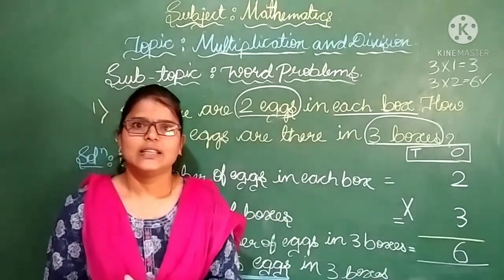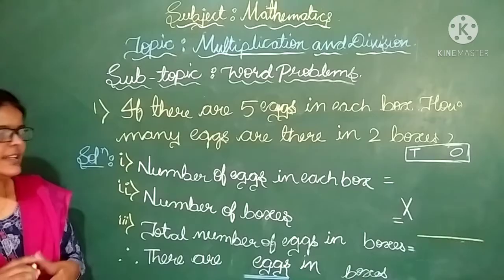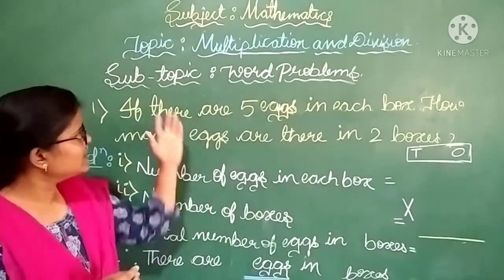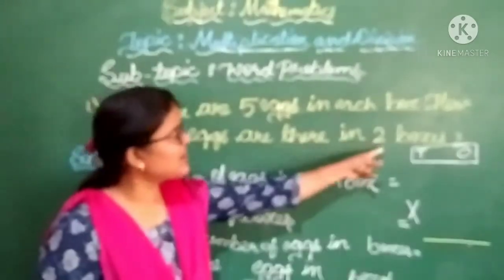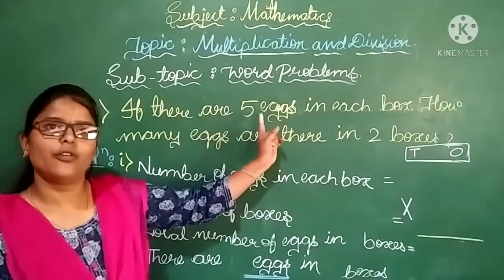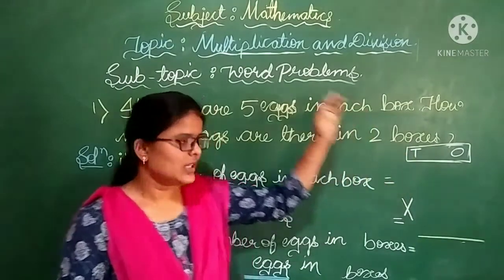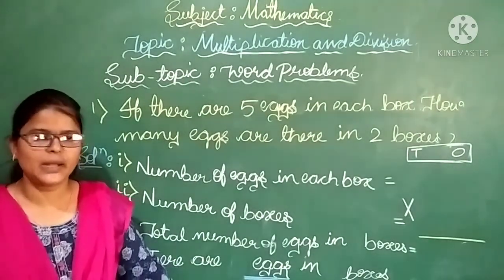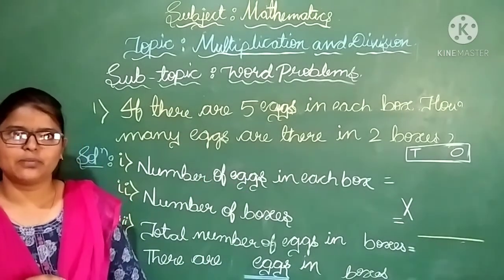Now this is the homework problem. I have changed the numbers. Number of eggs are 5 and number of boxes are 2. You must solve this problem in your assignment book.